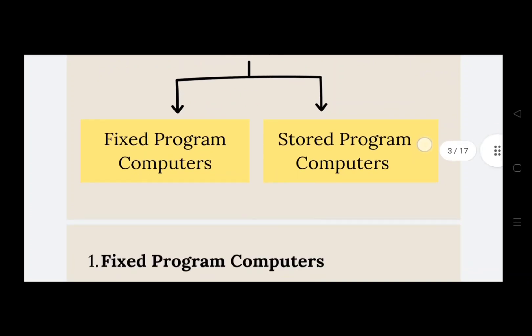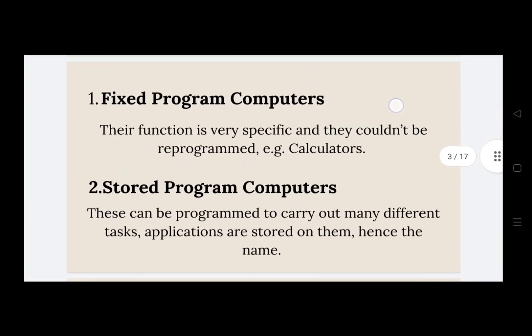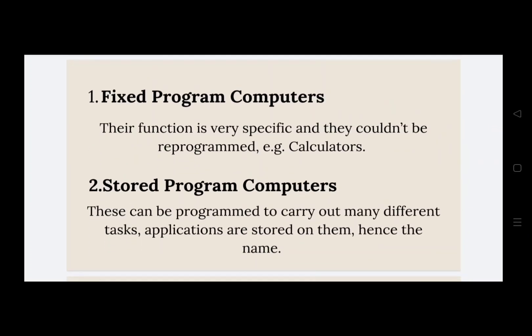What are these types? Fixed program computers have a very specific function and they couldn't be reprogrammed. Early computers followed the fixed program concept where they are programmed to do only one thing at a time. An example is the calculator.